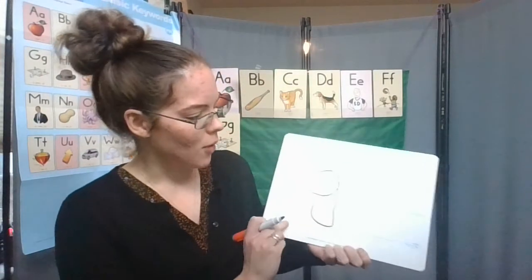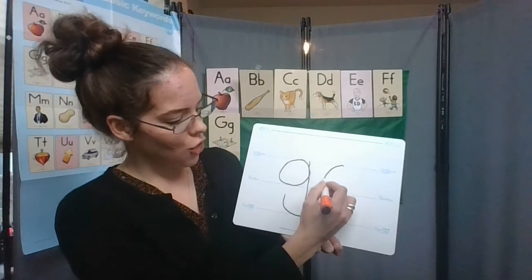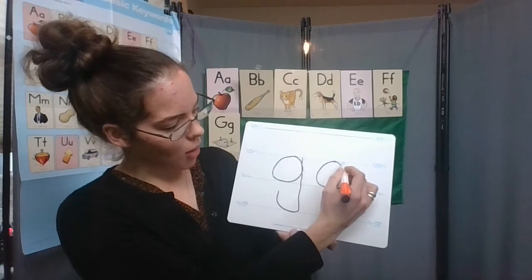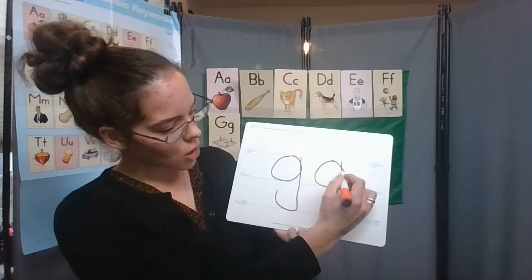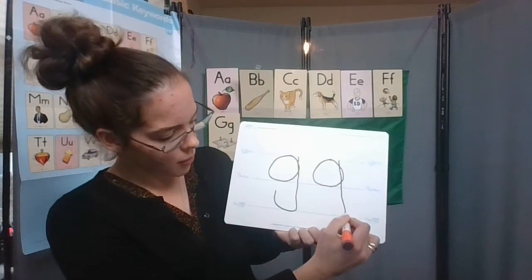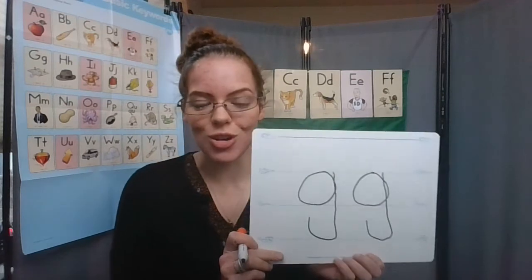Let's try that one more time. To make lowercase g, start in the middle, curve around to the bottom, back up to the middle, and then take your marker. Start in the middle, draw a straight line down, all the way past the bottom, curve up a little bit, and that's little g or lowercase g.